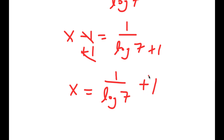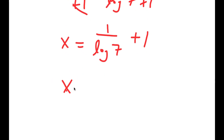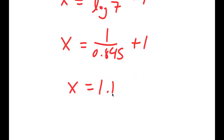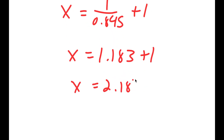Now log 7 equals 0.845. So 1 divided by log 7 equals 1.183. Therefore x equals 1.183 plus 1, which is equal to 2.183.